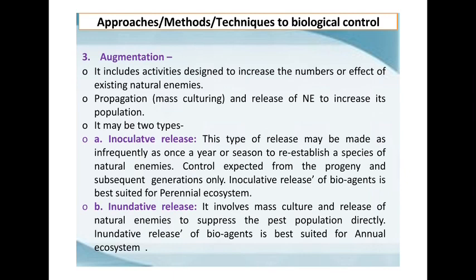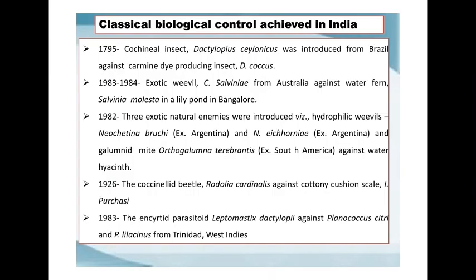Augmentation may be of two types: inoculative release and inundative release. In inoculative release, a species of natural enemies is released as infrequently as once a year or season to re-establish them, and control is expected from one progeny and subsequent generations only. Inoculative release of bioagents is best suited for perennial agro-ecosystems. In inundative release, it involves mass culture and release of natural enemies to suppress pest populations directly, and is best suited for annual agro-ecosystems.